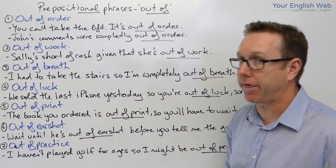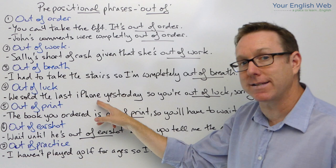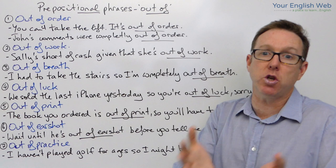The next one is 'out of luck'. If you're out of luck, you are unlucky. For example: 'We sold the last iPhone yesterday, sir, so you're out of luck.' You are unlucky because you can't buy the iPhone today because we sold the last one yesterday — so you're out of luck.